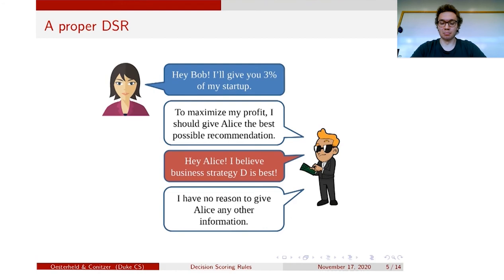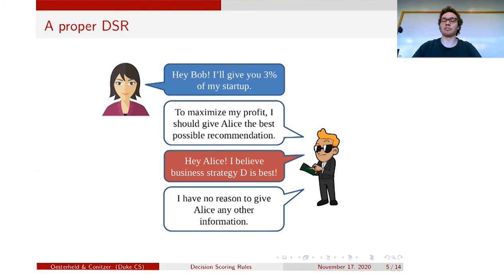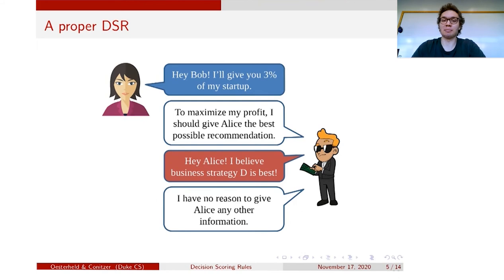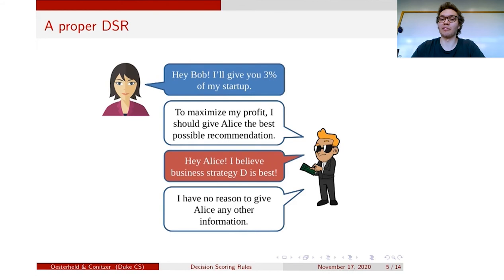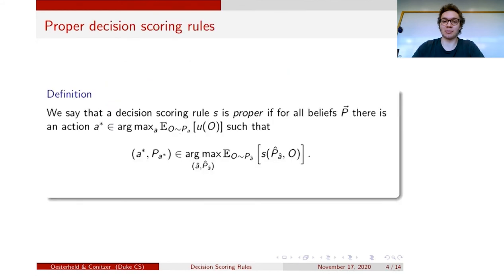Let's give an example of a very simple proper decision scoring rule. Alice could just go to Bob and say, 'I'll give you 3% of my startup' — some amount of shares. Once Bob has these shares, he wants to maximize their expected value, and to do so, he will simply give Alice his honest recommendation about what she should do. Because if Alice follows that recommendation, that's the way Bob maximizes the value of his shares. But Bob of course doesn't have any incentive to tell Alice anything else — he has no monetary incentive to give a probabilistic distribution of what will happen if the recommended business strategy were implemented.